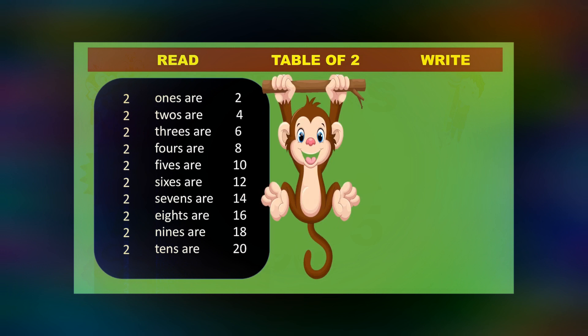Now we start the table. Learn with me. 2 1s are 2. 2 2s are 4. 2 3s are 6. 2 4s are 8. 2 5s are 10. 2 6s are 12. 2 7s are 14. 2 8s are 16. 2 9s are 18. 2 10s are 20.